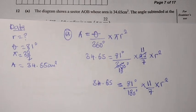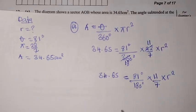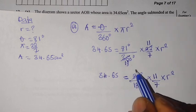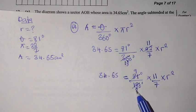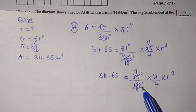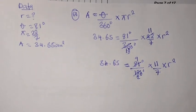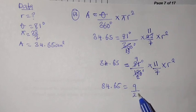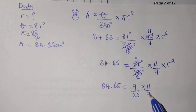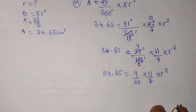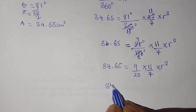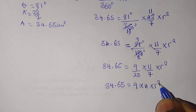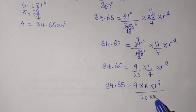From here, we can try to reduce these two numbers. We have 81 and 180. We can say 9 in 81 is 9, 9 in 180 is 20. So we have 34.65 equals 9 over 20 times 11 over 7 times R squared. We can rewrite it like this: 34.65 equals 9 times 11 times R squared over 20 times 7.